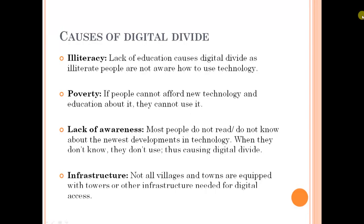The fourth reason for digital divide is infrastructure. Not all villages and towns in India are equipped with towers or other infrastructure needed for digital access. Rural areas in India are the biggest elements causing digital divide in the country, because of the lack of infrastructure which provides the technological assistance required. This has been a major problem which is being dealt with, but stands as a challenge nonetheless.